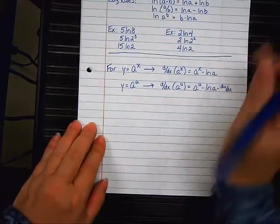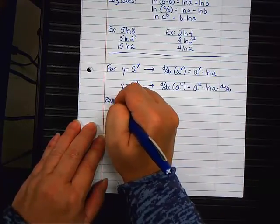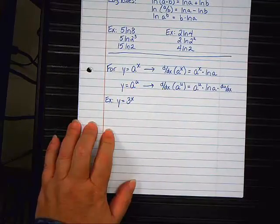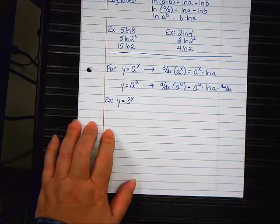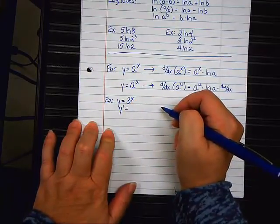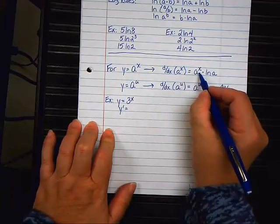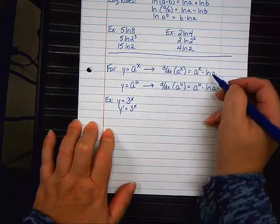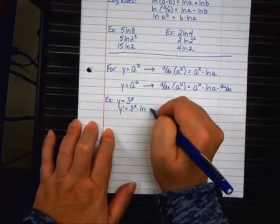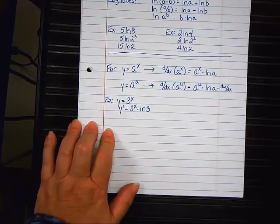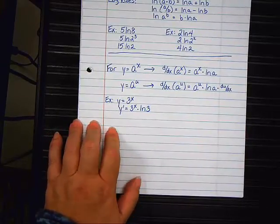Now, let's do some sample problems. For example, y equals three to the x. So, y prime equals, this is like the first row. So, the first step is you copy-paste three to the x times the natural log of what? Three. The end. That's the answer.